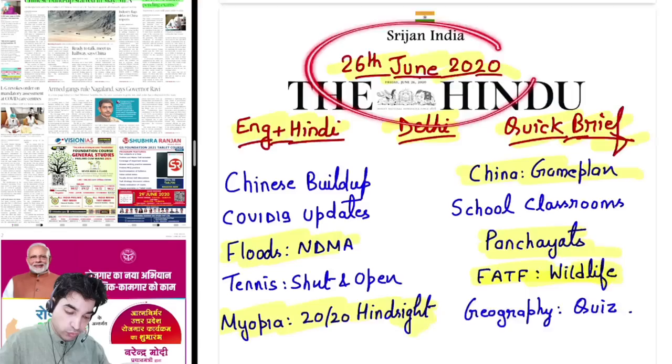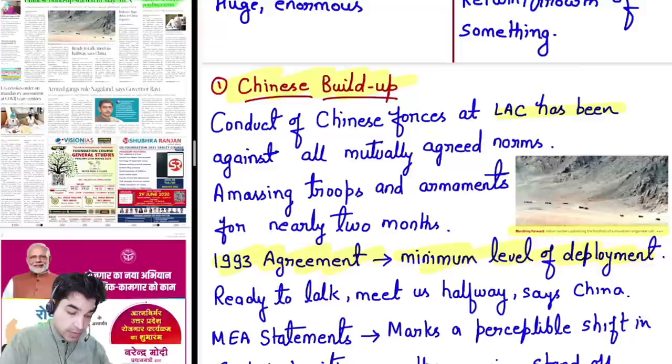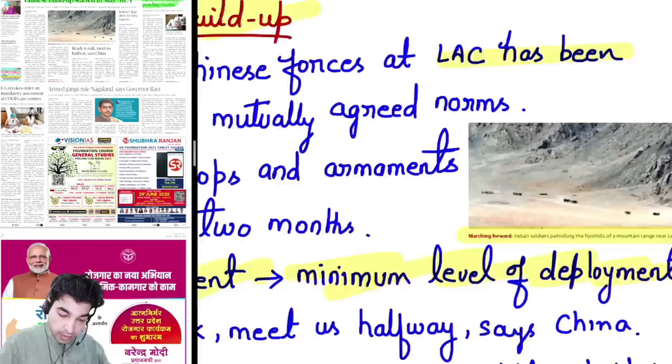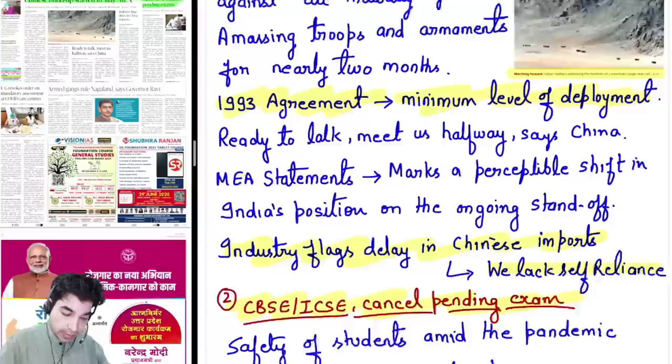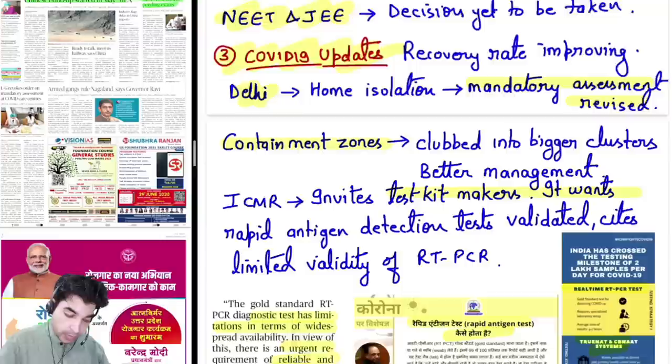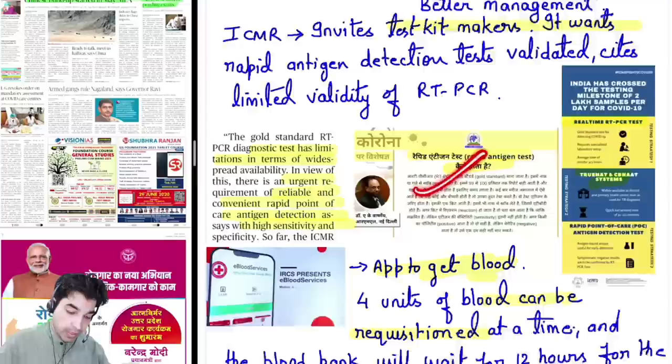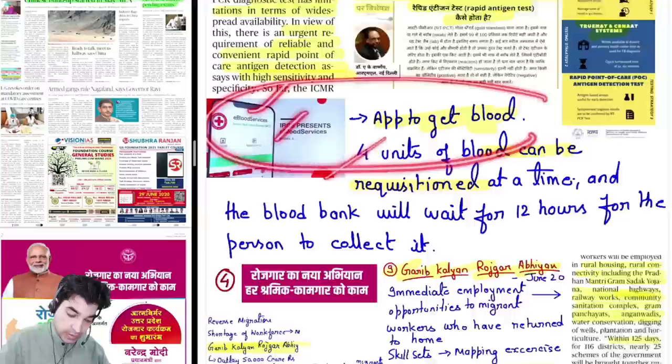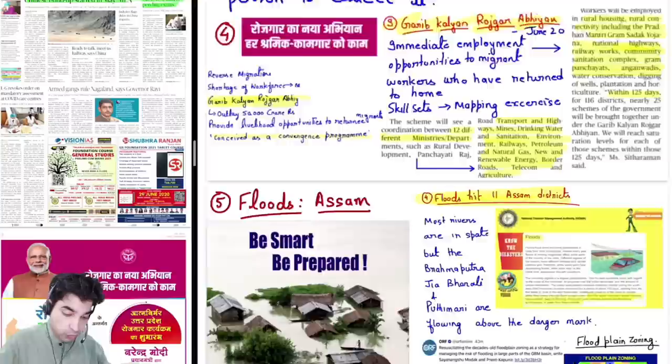Now let us have a quick brief of all the news items for 26th June 2020. First is about Chinese build-up — we will look at China's PLA development on the LAC. Second is CBSE and ICSE cancelling pending exams because of COVID-19. Then COVID-19 updates: containment zones, the RT-PCR method, rapid antigen test, and a new app — e-Blood Services. Fourth is about a new employment scheme.